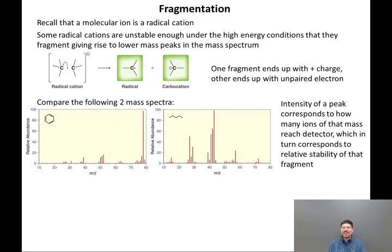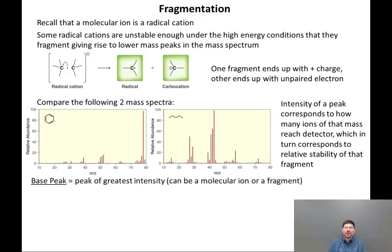The intensity of a peak corresponds to how many ions of that mass reach the detector, which in turn corresponds to the relative stability of that fragment. I want to introduce one more term to you, and that is the base peak. The base peak is the peak of greatest intensity in the spectrum. That can be a molecular ion or a fragment. In some cases where the molecular ion is unusually stable, such as benzene, it will be the base peak.